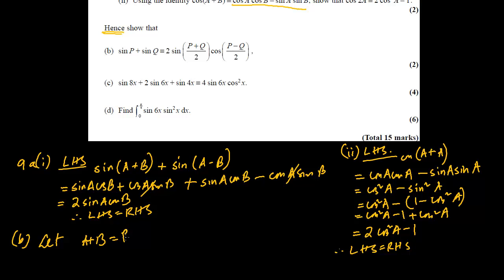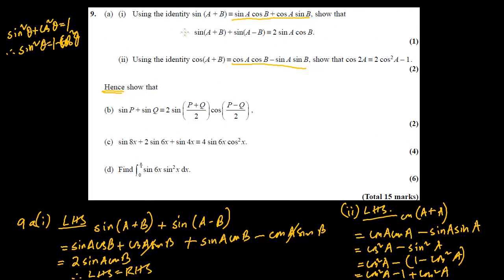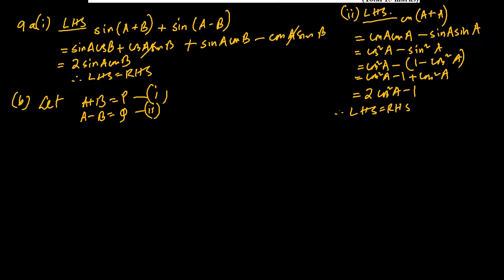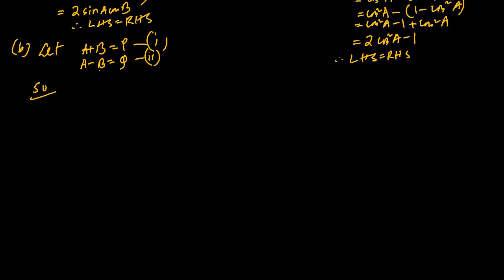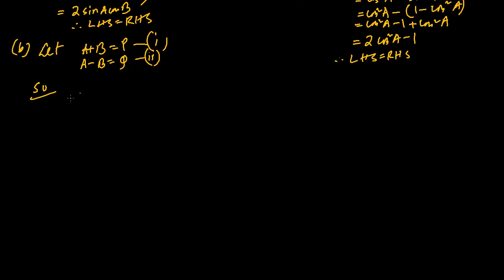We let A + B = P (equation 1) and A − B = Q (equation 2). So P corresponds to A+B and Q corresponds to A−B. We're matching these up and all we need to find is the value of A and B in terms of P and Q. Adding the two equations, the B terms cancel and 2A = P + Q.